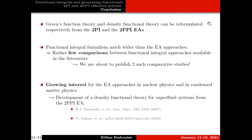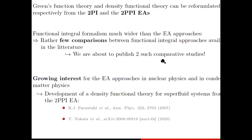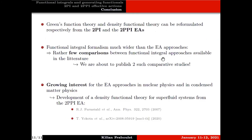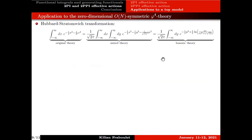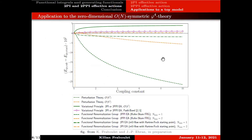We have about five minutes for questions. In slide eight, when you show the improvements of the effective action with respect to perturbation theory, it seems that perturbation theory immediately explodes at a quite large scale. How does it become so immediately wrong?